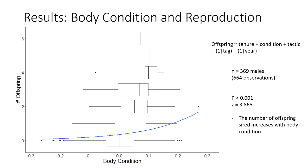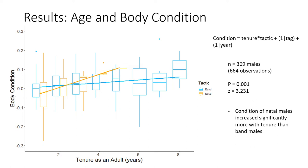Using the same general linear mixed model, we also found a positive effect of body condition on reproductive success. Males in better body condition were more likely to have more offspring each year than those in poor condition. We also found that body condition was significantly correlated with age, so individuals of greater age were more likely to be in better body condition than younger individuals.